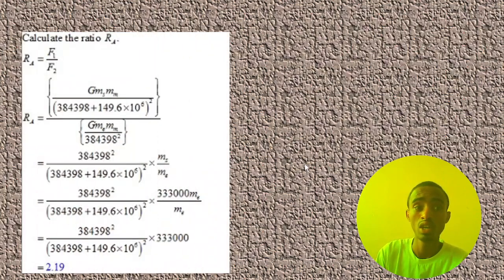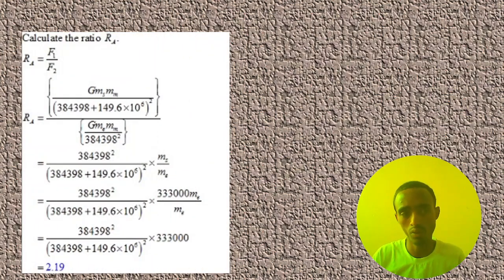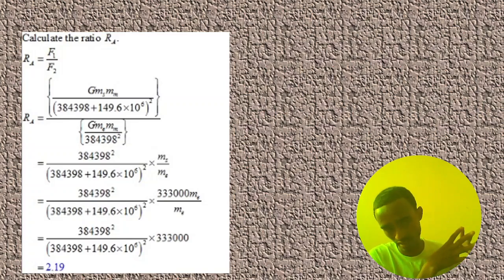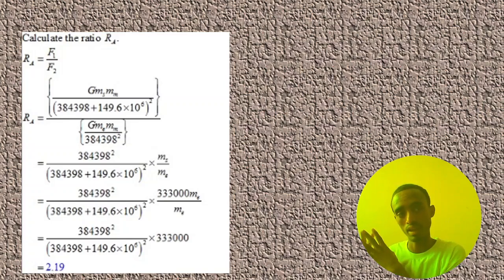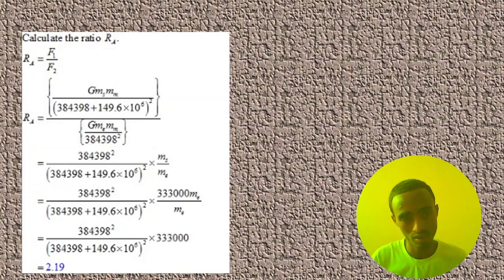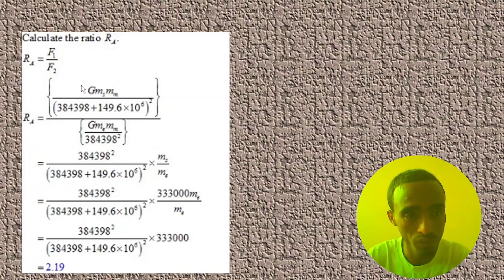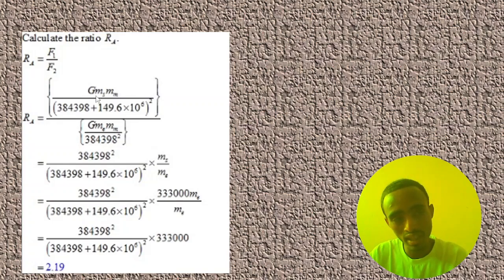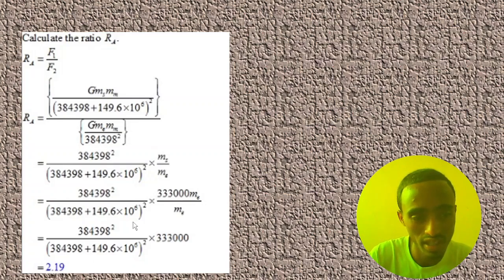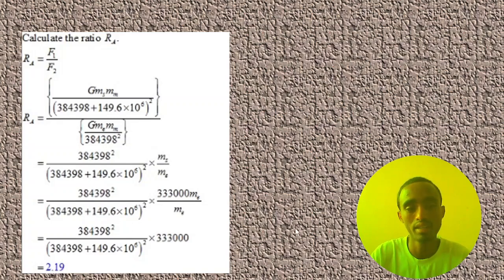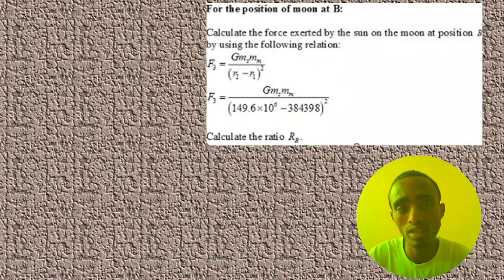After this, we will get the ratio of the two forces — the force exerted by the sun on the moon divided by the force exerted by the earth on the moon — and we will get the ratio. From the previous slide, we simplify and we will get Ra equals 2.19. It is a simple task and you can do it by yourself.